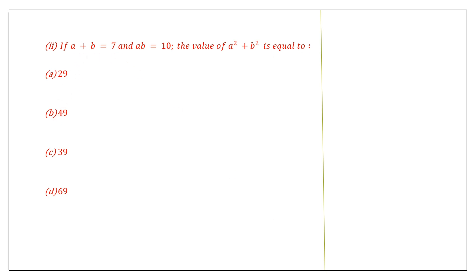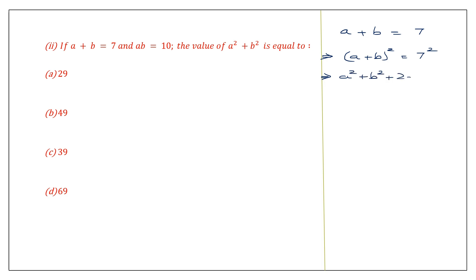Let's write this down. We have a plus b equal to 7. We can square both sides, so a plus b the whole square equals 7 squared. Expanding using the formula: a squared plus b squared plus 2ab equals 7 squared, which is 49.